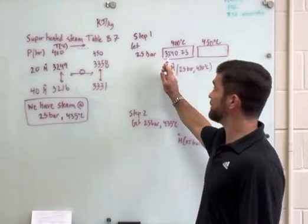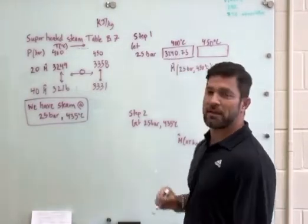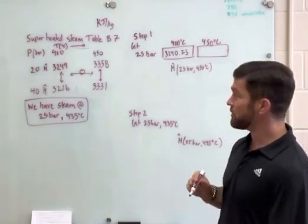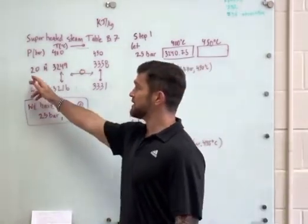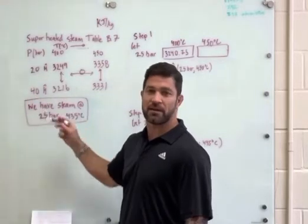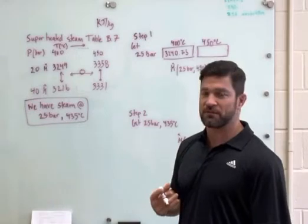So this is the enthalpy of superheated steam at 25 bar and 400 degrees C. And at the same time, I'm just going to show you one here. So what I want to do first is I want to see what is the difference in these two index values from 20 to 40, where my value of 25 is.